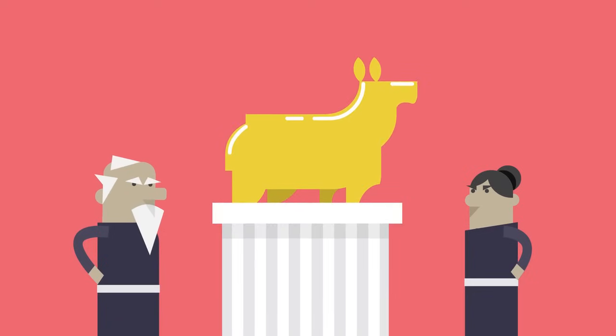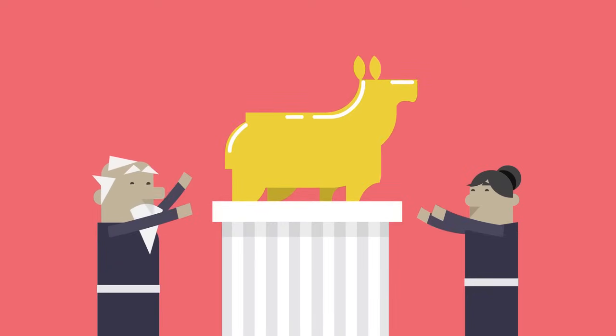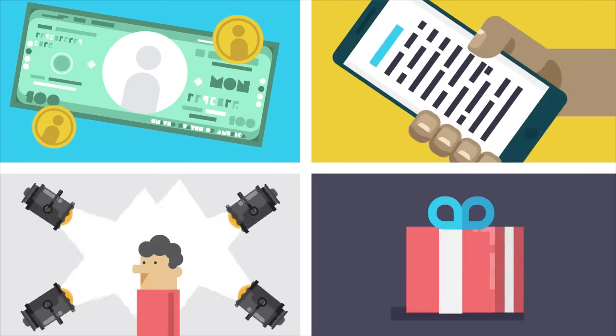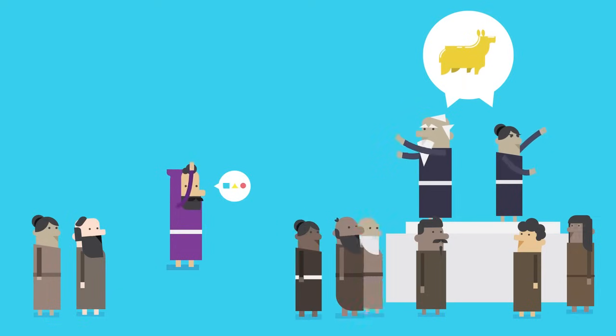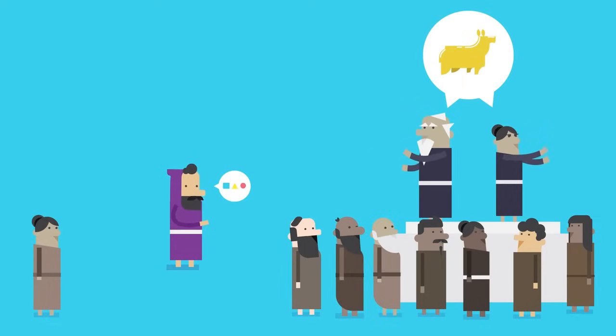See, Ahab and Jezebel worshipped Baal instead of God. Baal was a false god, an idol. Kids, an idol is anything that gets the attention we should be giving God. Money, stuff, or even people can be idols. And when Ahab and Jezebel worshipped Baal, they turned a lot of God's family away from God too. But here's the thing. God wants all of our worship and love. And he totally deserves it.